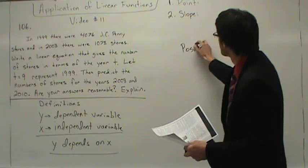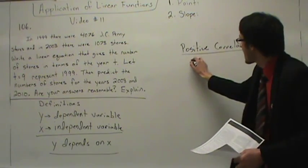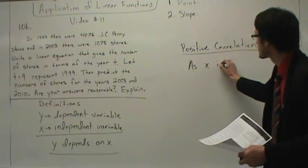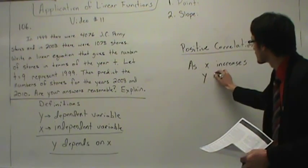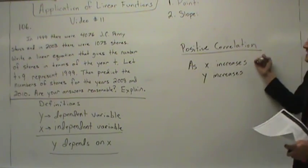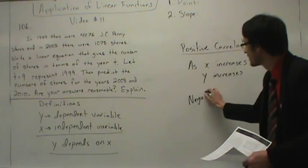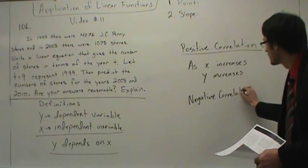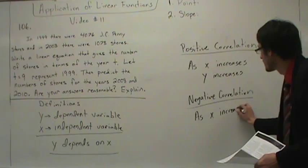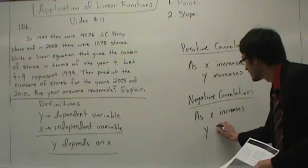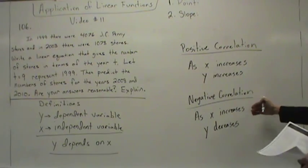We're going to look at positive correlation. Positive correlation means: as X increases, Y increases. You can think of positive correlation as positive slope — as one goes up, the other goes up. We also have negative correlation: as X increases, Y decreases. Positive correlation means positive slope; negative correlation means negative slope. That's one way to think of it.